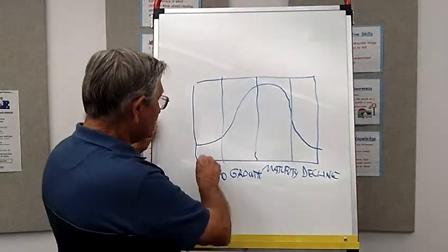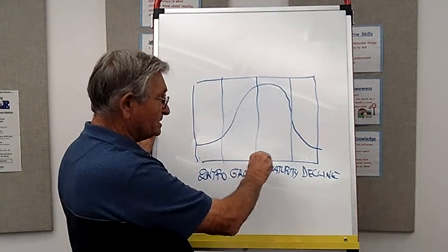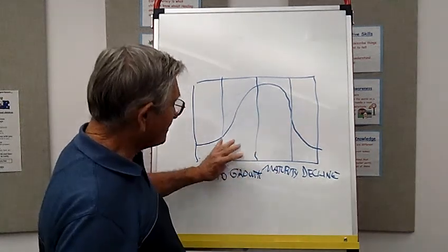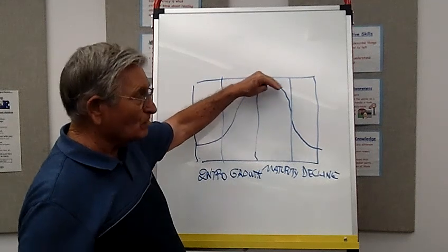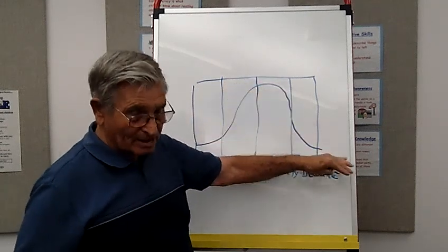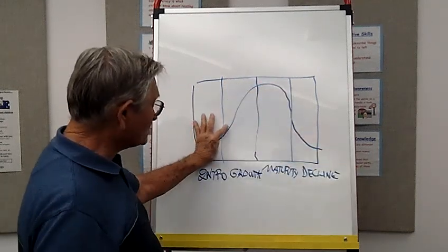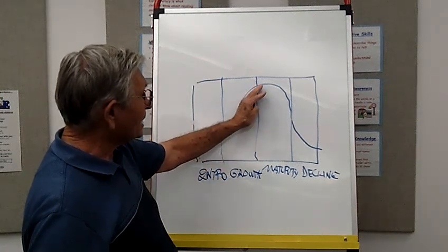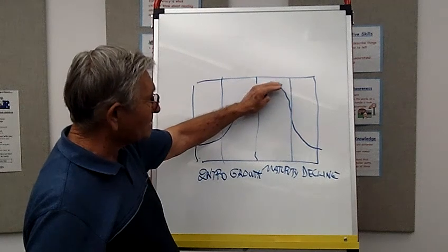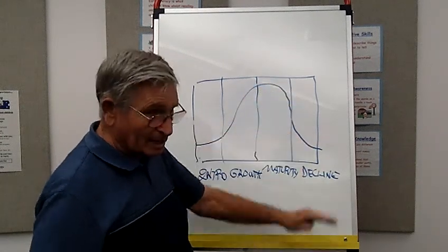Now, these four phases here represent the stages that every product goes through in that life cycle of that product from its original introduction, its original growth, and then as it comes up and peaks out into maturity, and ultimately into decline.